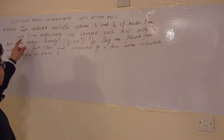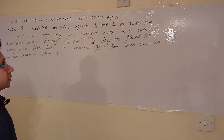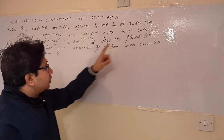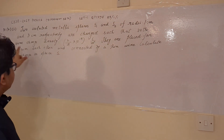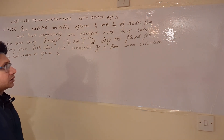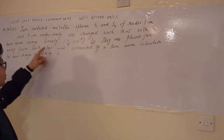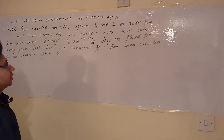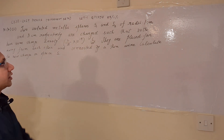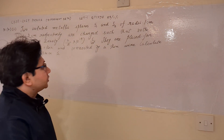Now the question is: two isolated metallic spheres S1 and S2 of radii 1 cm and 3 cm respectively are charged such that both have the same charge density 2/π × 10⁻⁹ coulomb per meter square. They are